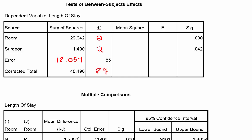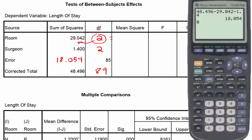From here we can get the mean square for treatment and the mean square for blocks — in other words, the mean square for the room variable. That's simply by dividing the degrees of freedom into the sum of squares to give us the mean square. It's going to be approximately 15 — because we're doing half of 29 — so 29.042 divided by 2 gives us 14.521.